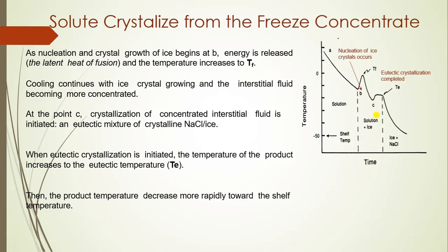A eutectic mixture is a mixture of two crystalline substances that melt as a single pure compound. When eutectic crystallization is initiated, the temperature increases to the eutectic temperature TE, and then the product temperature decreases more rapidly towards the shelf temperature because there is no remaining liquid substance to absorb heat and solidify. Once the eutectic temperature is attained, the temperature reduces towards the shelf temperature, as seen in the diagram.